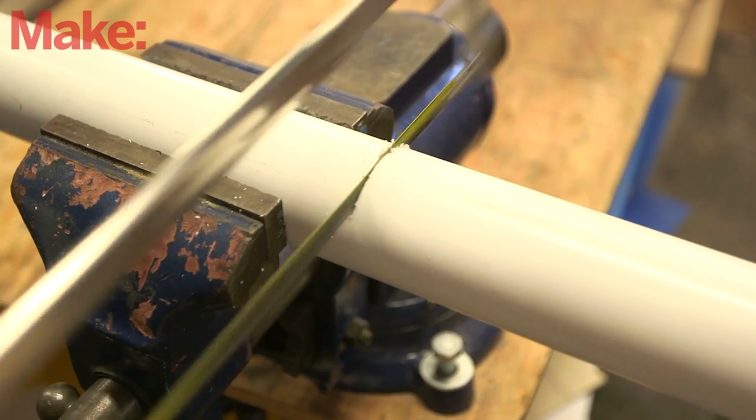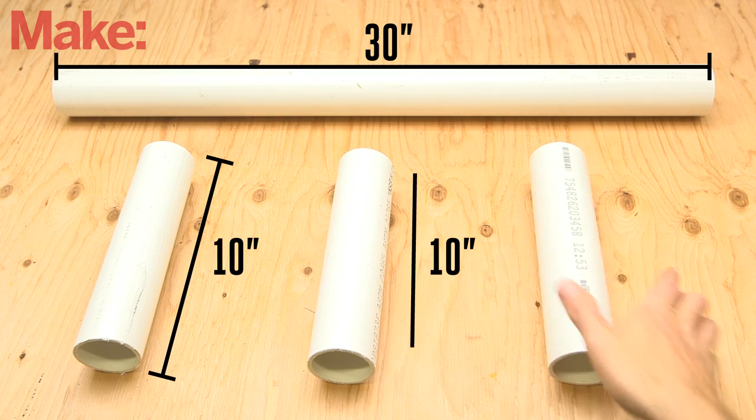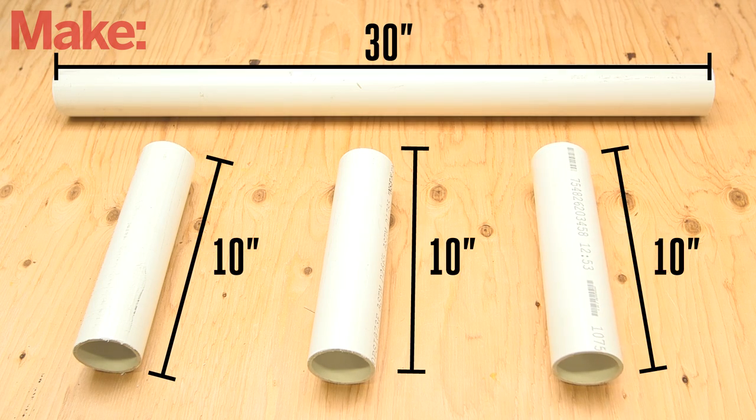First off, cut the PVC pieces. There are four pieces of PVC pipe used to build the cannon. This is the easiest part of the build.